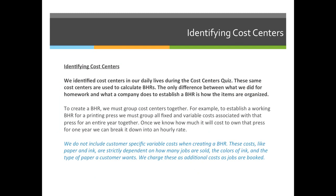Now that we've identified that the cost to produce something — in our case printing, but it can be anything — includes hourly rate charges plus material costs, we can start identifying the cost centers we'll need to create our own BHR. We identified cost centers in our daily lives during the cost centers quiz last week, and those same cost centers are used for calculating budgeted hourly rates. The only difference between what we did for homework and what a company does to establish a BHR is how the items are organized.